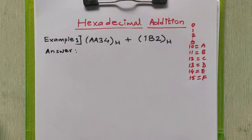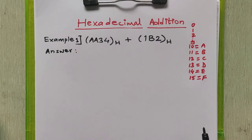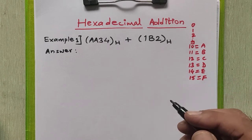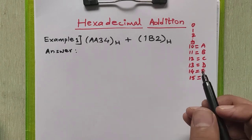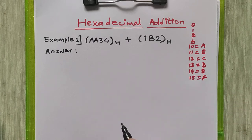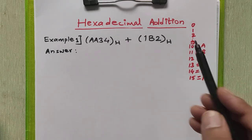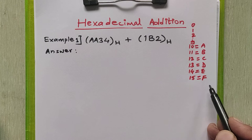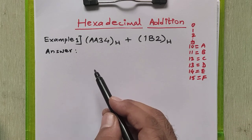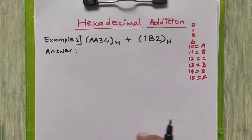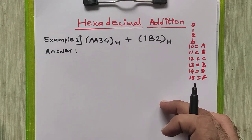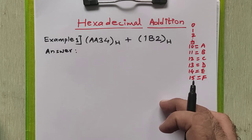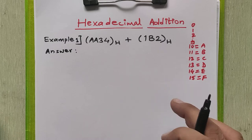Now, how to perform this direct addition? As we know in decimal addition, we generate a carry if and only if the addition of two digits exceeds the last valid number of that number system. So here also we generate a carry if the addition of two digits exceeds the last valid digit, that is 15. Whenever it exceeds 15 we generate a carry, and if there are certain invalid digits in the result, we need to subtract 16 from each and every invalid digit to get the actual result.